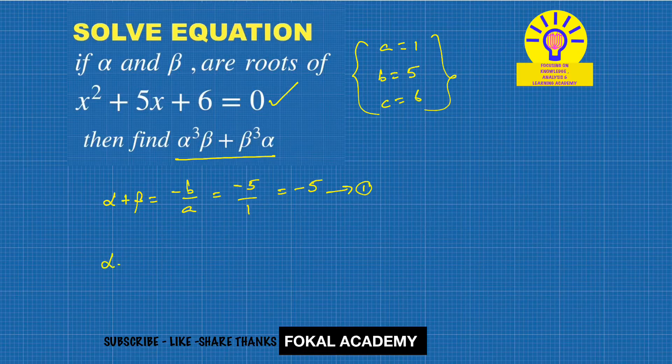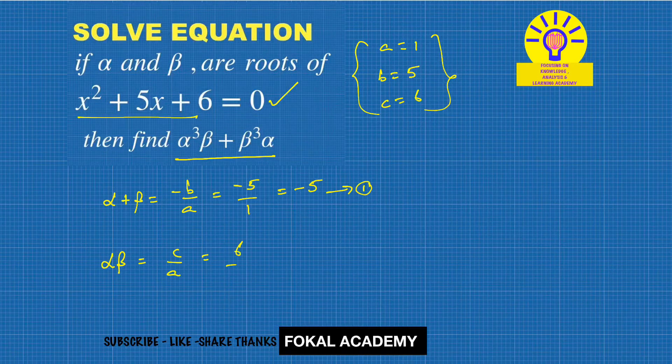Next, the product of the roots from the quadratic equation equals C/A, that is 6/1 = 6. So this is the second equation.